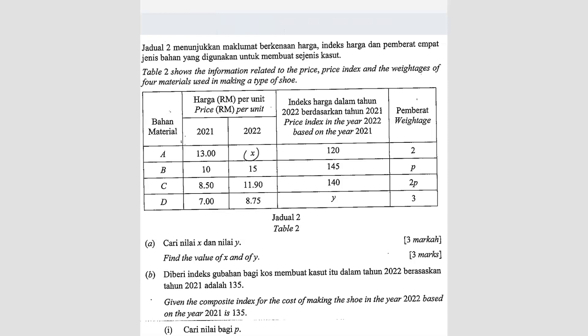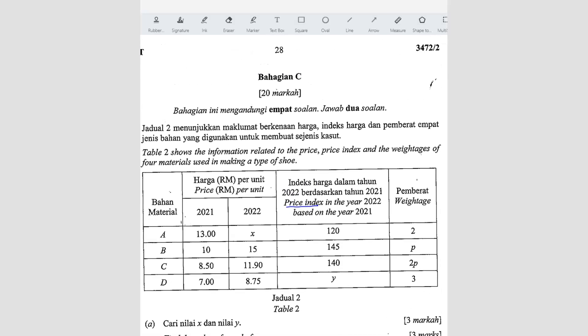X and Y are these two values. So to find them, first of all, we identify what each column represents: this is the price index, this will be the price per unit, and this is the weightage. So X and Y basically require the price index formula. We're going to use the price index formula. Let's find X first. We know that X over 13 times 100 will give you 120.